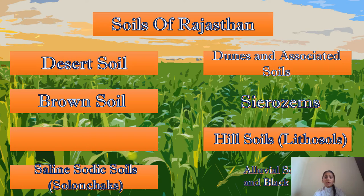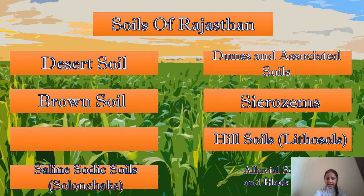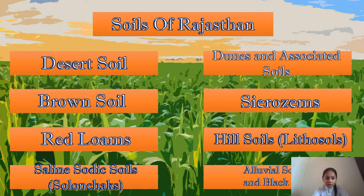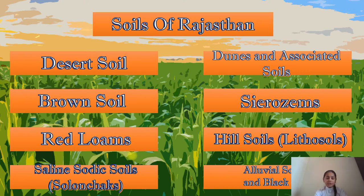The soil of Rajasthan is divided into eight categories: desert soil, brown soil, red loams, saline-sodic soil, bune and associated soil, serozems, hill soils (also known as lithosols), and alluvial soil and black soil.